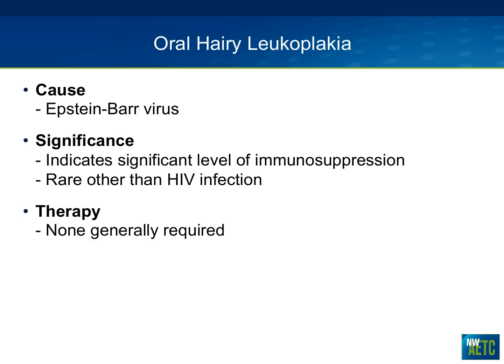If you were working in an urgent care setting and saw somebody present with shortness of breath with a chest x-ray showing diffuse infiltrates, and you looked in their mouth and saw this, you could conclude there's a significant likelihood this person has HIV infection. Rarely this has been seen with transplantation patients or other severely immunocompromised patients, but if you see it, you should really think about HIV infection. The good news is, other than getting patients on antiretroviral therapy, there is rarely an indication to need any additional therapy. There are some reports in the literature of people using drugs like acyclovir and valacyclovir, but these lesions tend to go away after being on antiretroviral therapy for about three to six months.